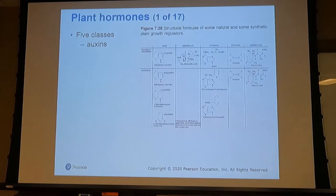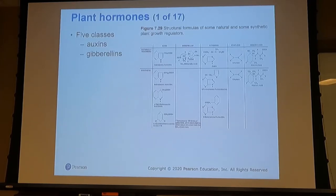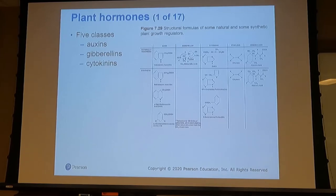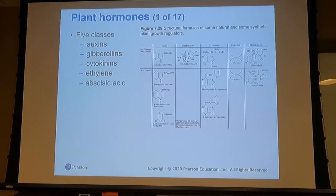There are five classes of plant hormones: auxins, gibberellins, cytokinins, ethylene, and abscisic acid. Each one has a distinct role in the plant's life cycle.